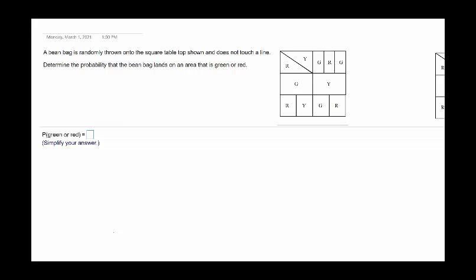The mistake people make is they try to go directly to getting the answer. On a problem like this, you want to first go to the diagram and label what each portion is probability-wise. How much of the whole rectangle or whole square is each piece?